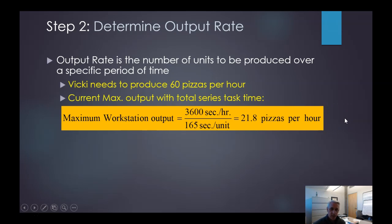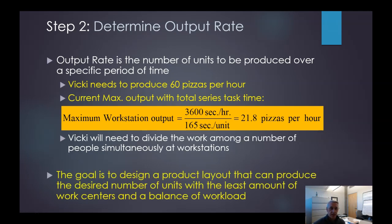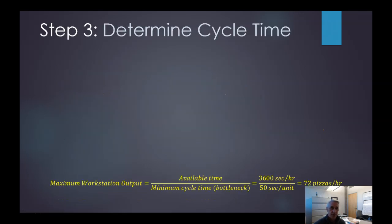So how do we improve efficiency? Well, we can create more stations. So she will need to divide the work among other people to have simultaneous workstations or have work being done simultaneously at workstations. And again, remember the goal is to design a product layout that can produce the desired number of units, which in this case is 60 pizzas per hour, with the least amount of work centers. You could put tons of work centers, but you don't want to have more work centers than necessary so that we can peak our efficiency.